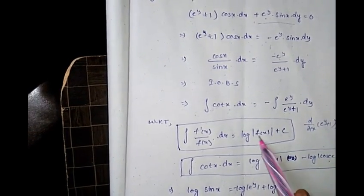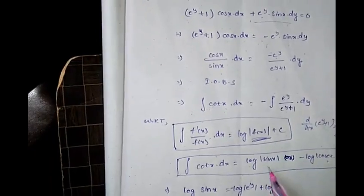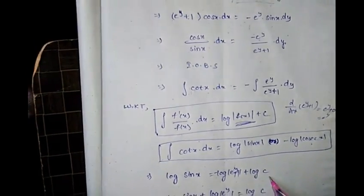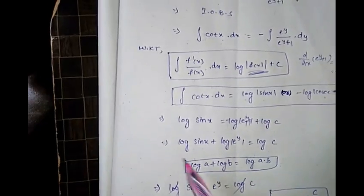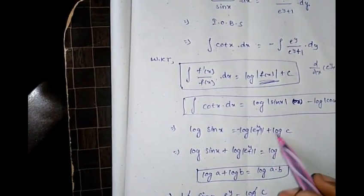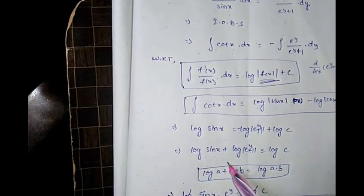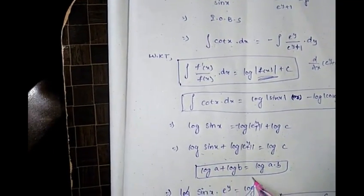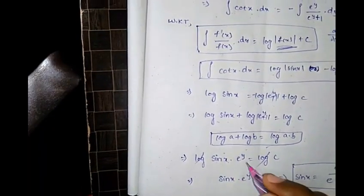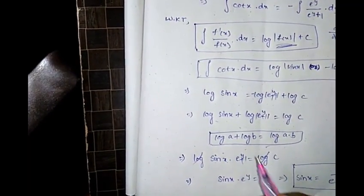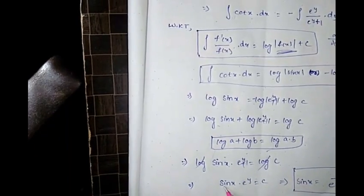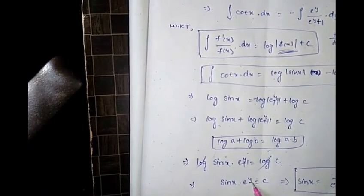Integrating: log|sinx| = −log|eʸ+1| + log c. This gives log|sinx| + log|eʸ+1| = log c. Using log a + log b = log(ab), we get log(sinx · (eʸ+1)) = log c.